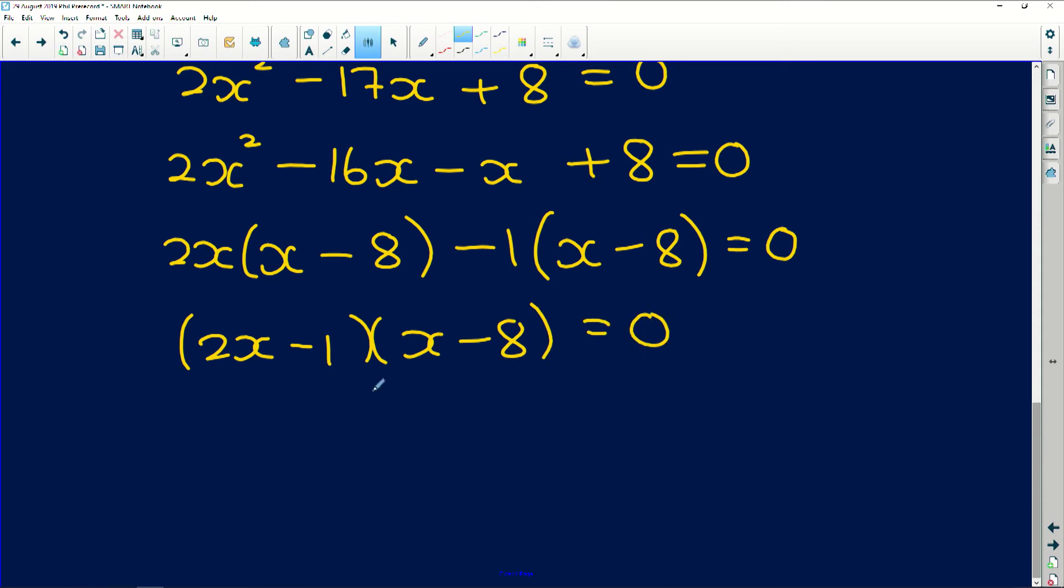Now remember by your zero product theorem, if two things are multiplied by each other, one of them has to equal 0. So 2x minus 1 is equal to 0, which means that x is equal to a half, or x is equal to 8. And that makes perfect sense because we have a quadratic equation over here, which means we could have two different x values that satisfy this quadratic equation.